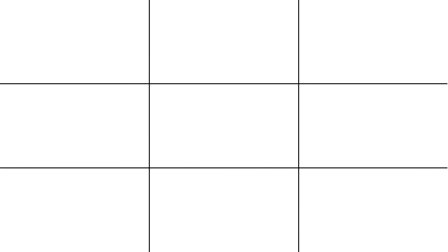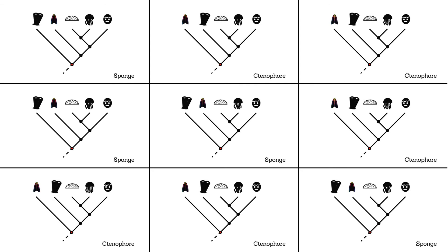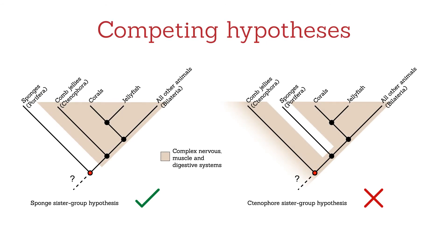Now, a new study led by the University of Bristol has evaluated the performance of each model used in the sponge-ctenophore argument. It's been shown that the better-fitting models support sponges as being the sister group to all other animals. We can therefore say that the last common ancestor of these two groups was probably sponge-like, and that it did not possess the complex anatomical systems of all other animals alive today.